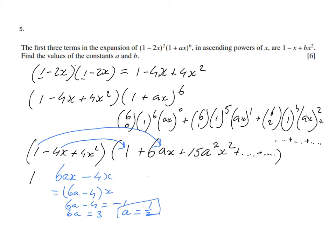I'm going to do a similar thing for b. That's the x² term. When am I going to get x²? Well, let's find out. First of all, if I times 1 by the x² term itself, I'm going to get something in x². So let's do that in red. 1 times 15a²x², which is 15a²x². So that's a term in x² after the expansion.